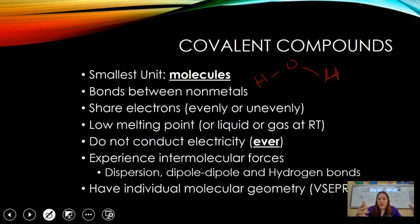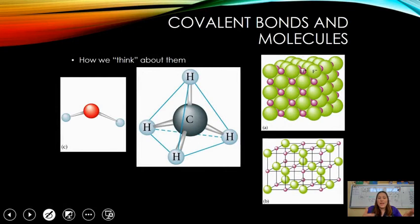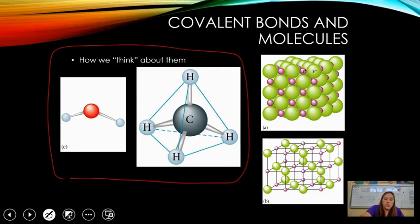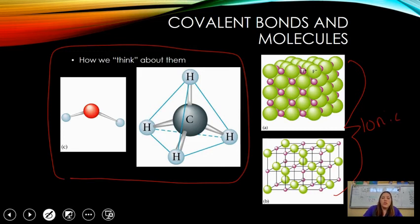Covalent compounds experience intermolecular forces — forces of attraction between individual molecules. They're not chemical bonds; it's not like holding hands, but there's an attractive force. They also have individual molecular geometry — different ways that atoms are going to fill space. Individual structures are your molecules, whereas the repeating pattern is your ionic compound or formula units.